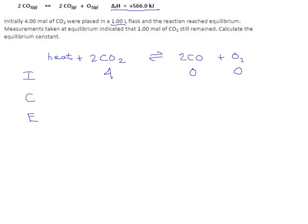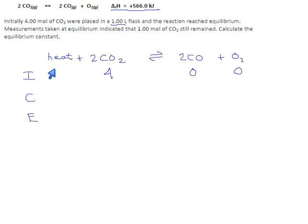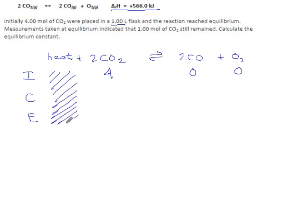So we start with 4.00, and I'm not going to track the amount of heat. You could track kilojoules, but I don't think that's going to come up, so I'm just going to focus on the concentrations. I have never seen an ICE table that used heat, even though theoretically it could — you'd have to measure energy content, total energy in the system before and after, which is difficult to do. So don't worry about the heat column.